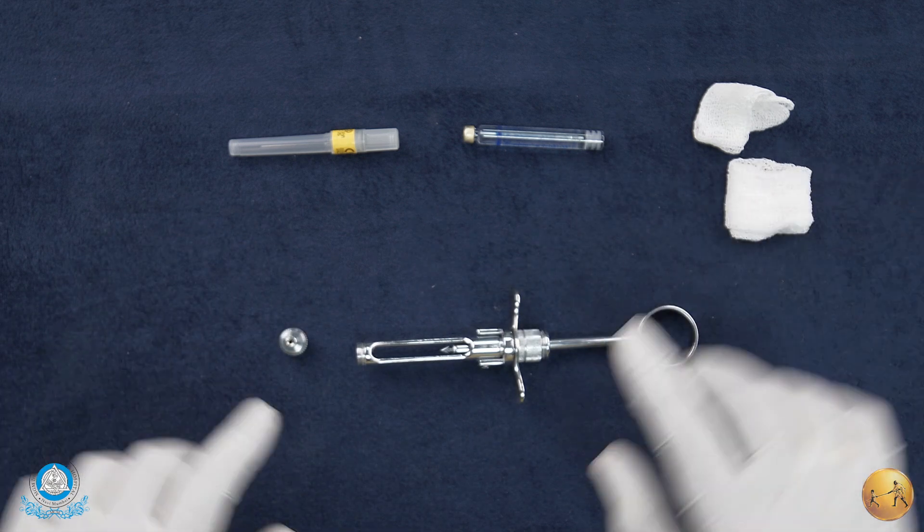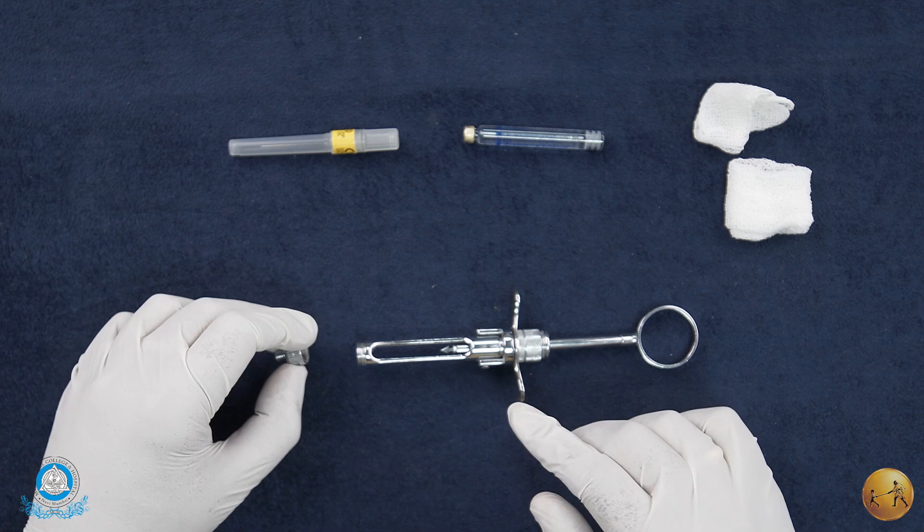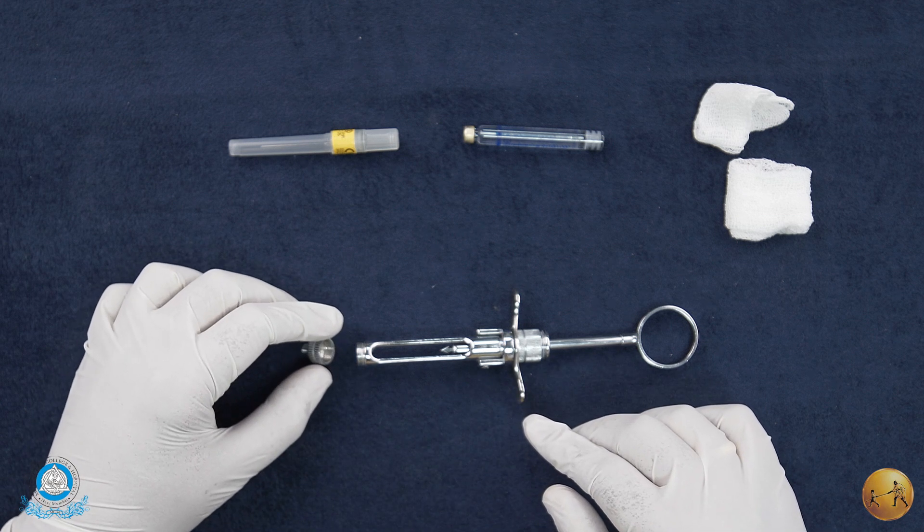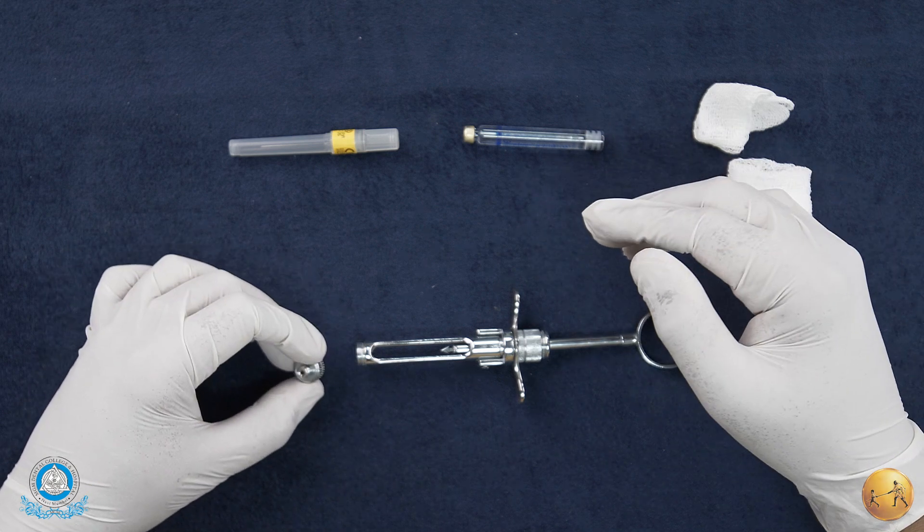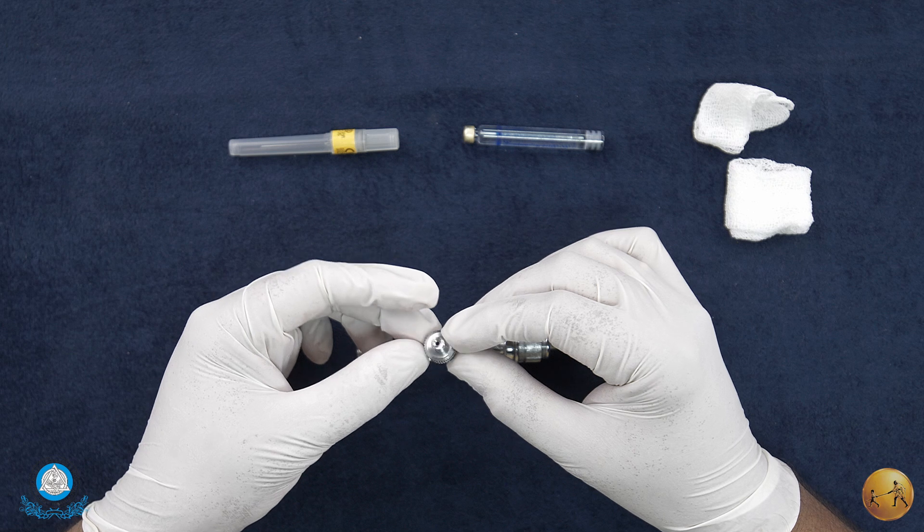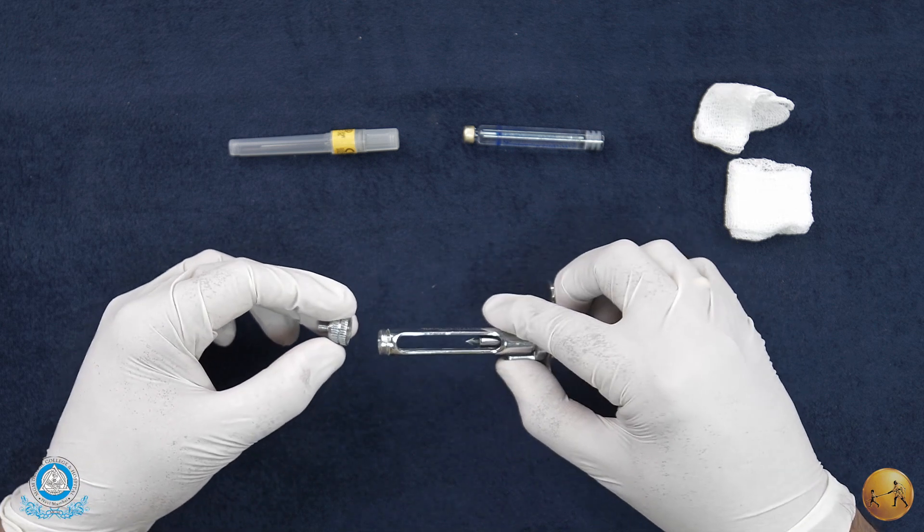What you see here is a breech loading syringe - it could also be used as an end loading syringe, I'll show you how that works. This is the needle adapter - this is what goes on to the syringe at the front which also accepts the needle.